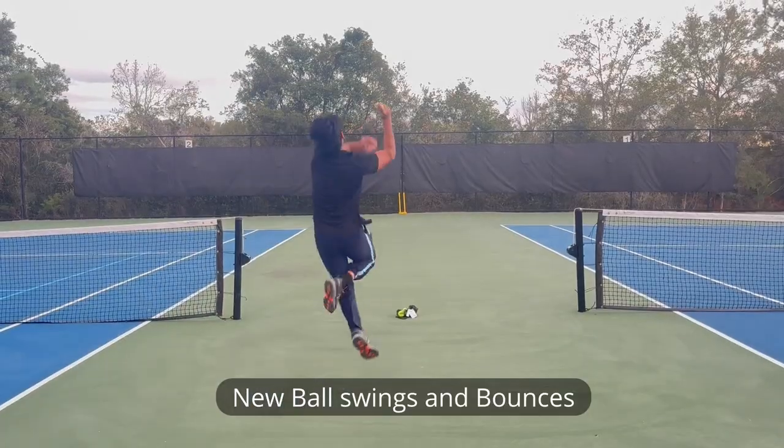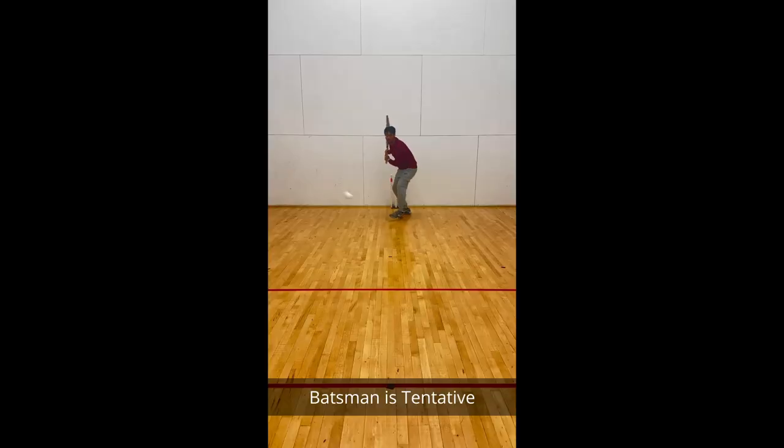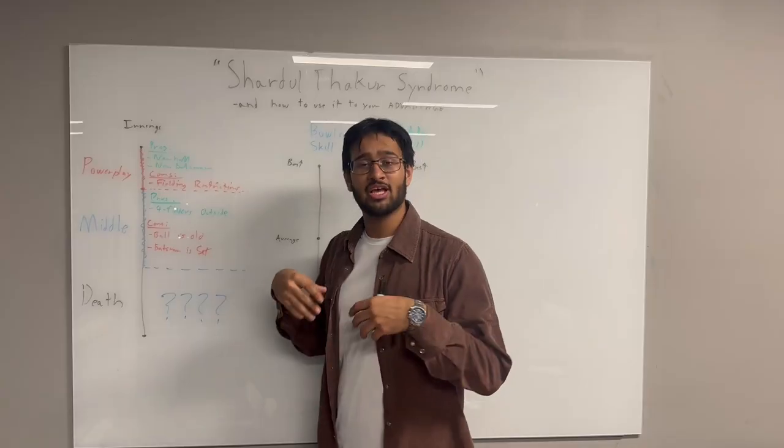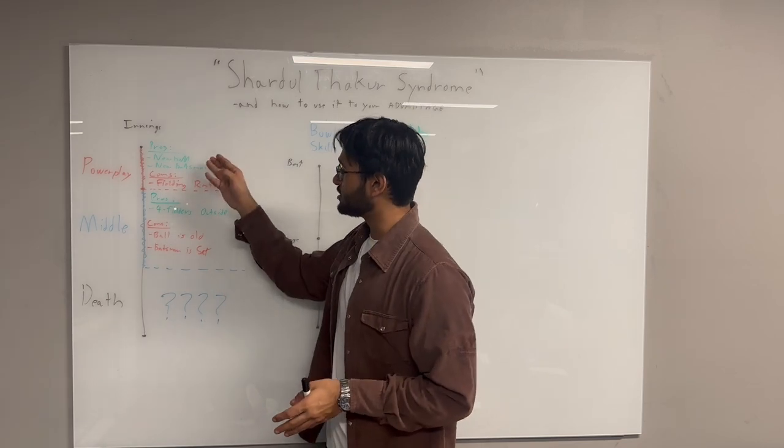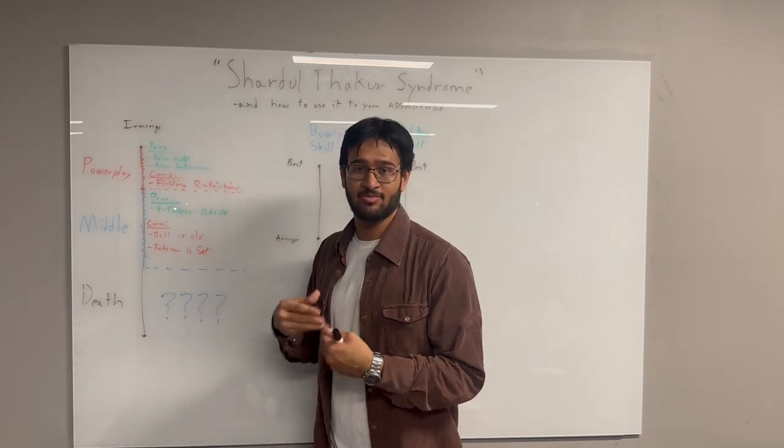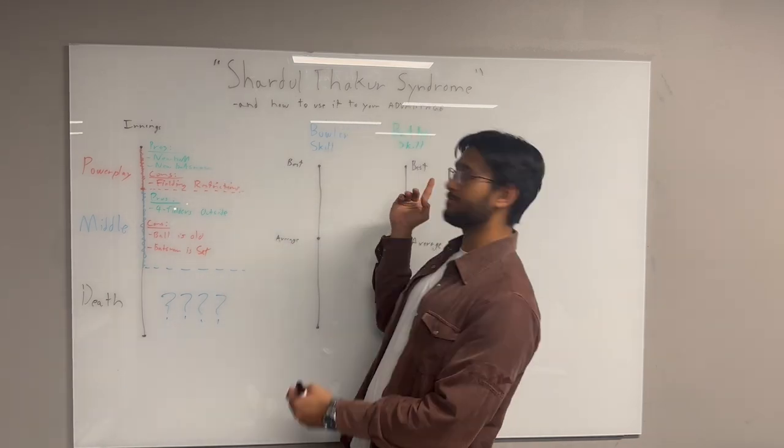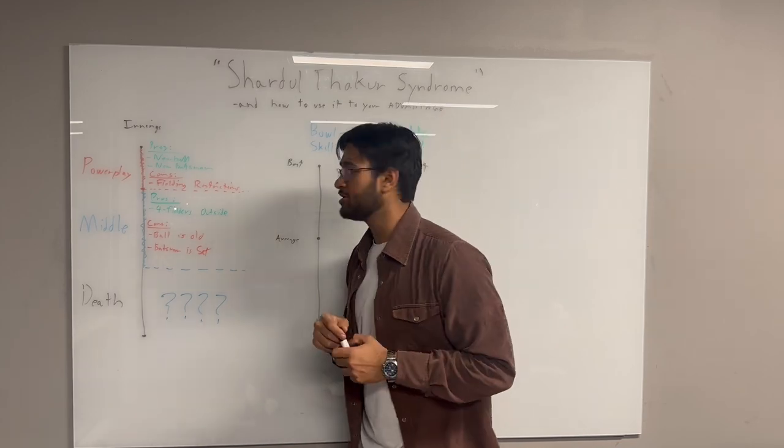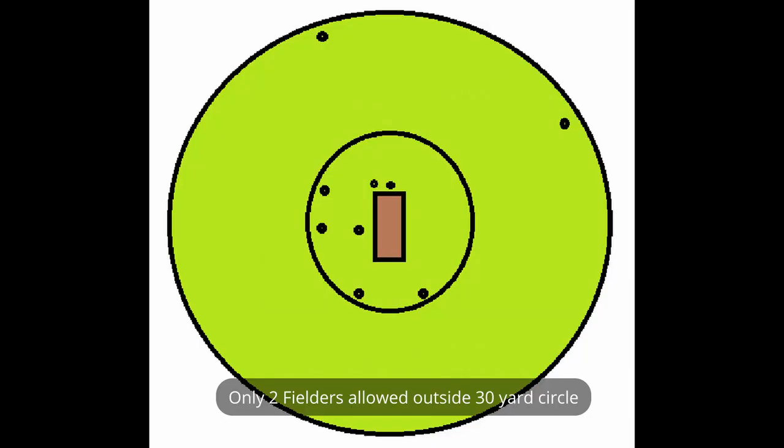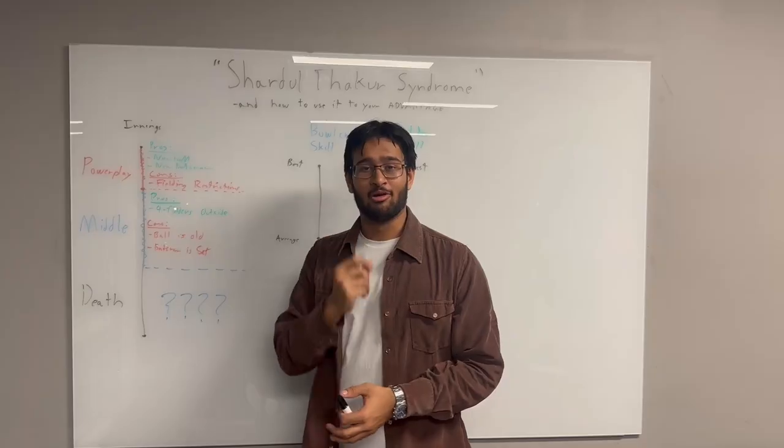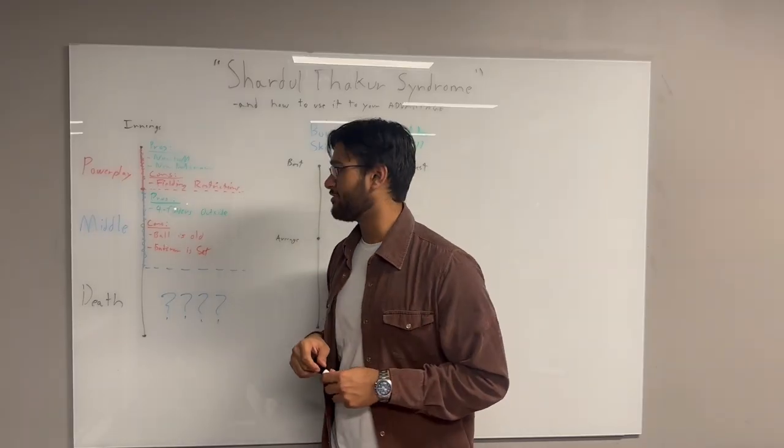In the powerplay, the ball is usually new and the batsmen are also new. So you want your best bowlers to bowl so they can use the new ball and get the best batsmen out, because teams also send their best batsmen at the top. The one problem of bowling in the powerplay is that the fielders are up, so you want to trust that your best bowlers are capable of mitigating that weakness.